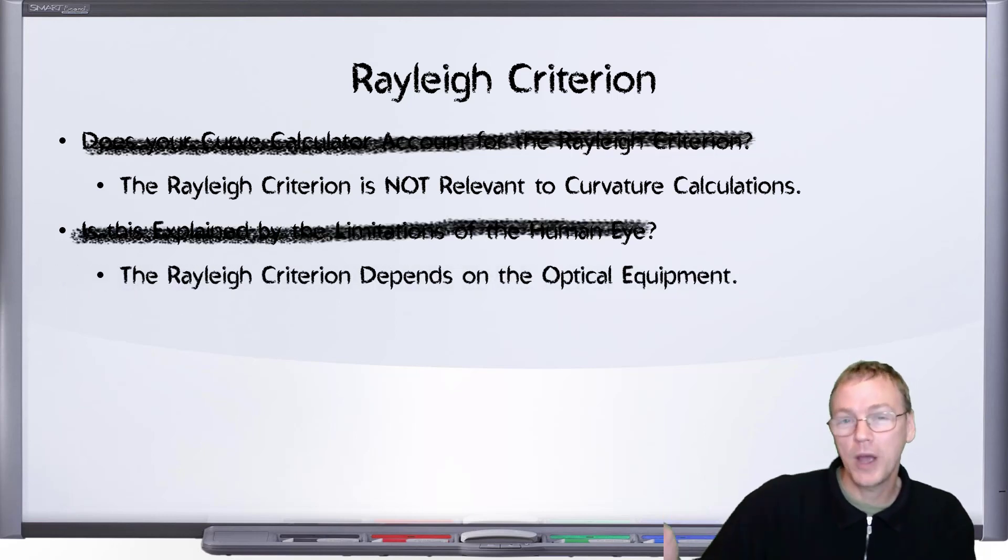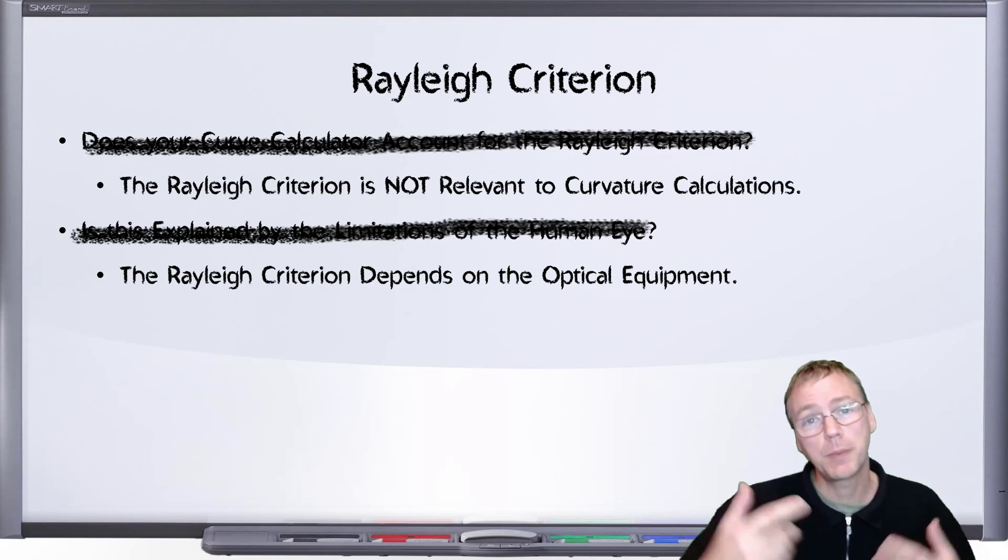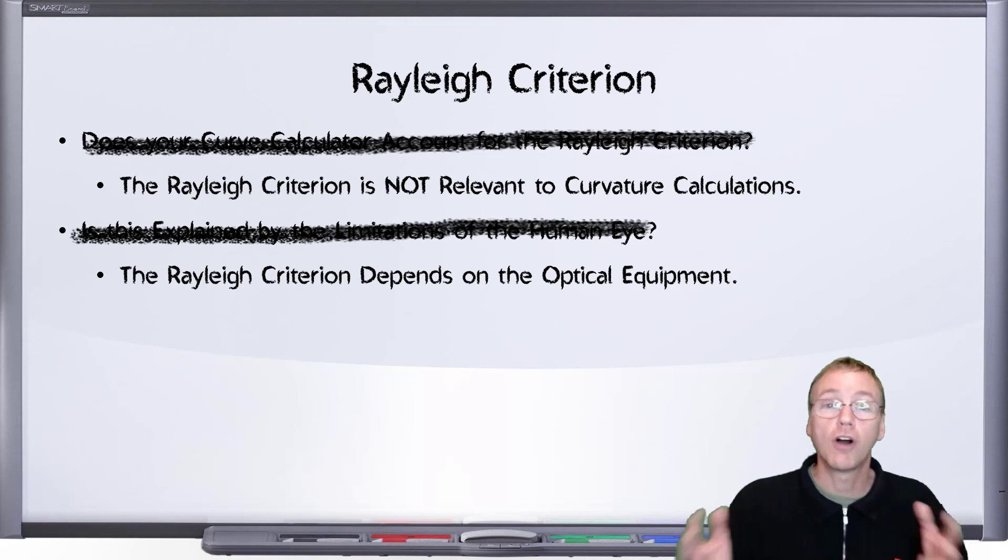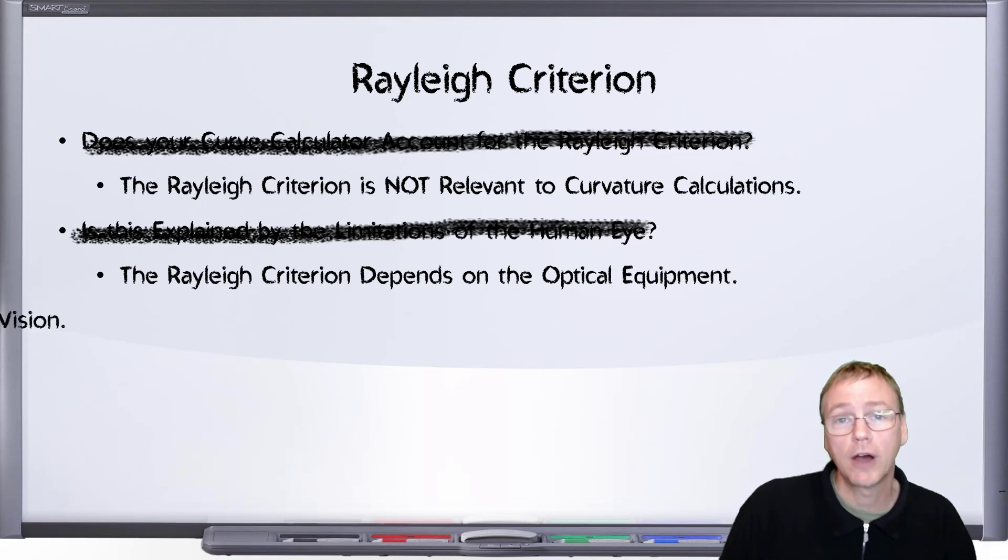Well, what we saw from the equation was that the Rayleigh Criterion depends on the size of your lens. So if you have an observation of a distant object that you cannot resolve with your current optical equipment, you can always get a bigger telescope to resolve that. And I really shouldn't have to point this out,